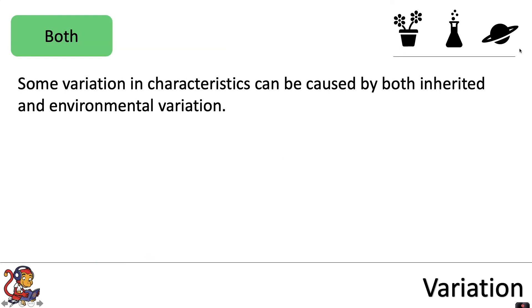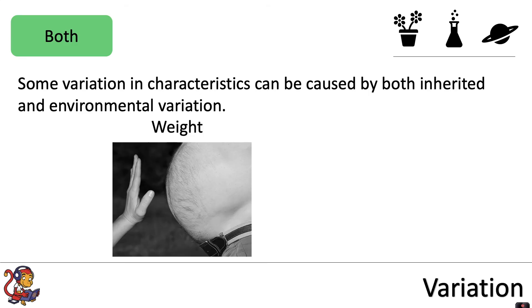Some variation in characteristics can be caused by both inherited and environmental variation. Weight and height are two examples of characteristics that are caused by both inherited and environmental variation. For both of these characteristics, there are elements that are determined by the genetics that you inherit from your mother and father.